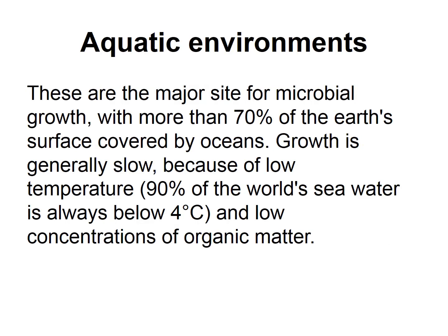In the aquatic environment, whether freshwater or marine water, there are major sites for microbial growth, with more than 70% of the earth's surface covered by oceans. However, growth is generally slow because of fluctuating and lower temperatures — most of the sea water in the globe is below four degrees Celsius — and there are also various degrees of organics available. So it is generally not very diverse.